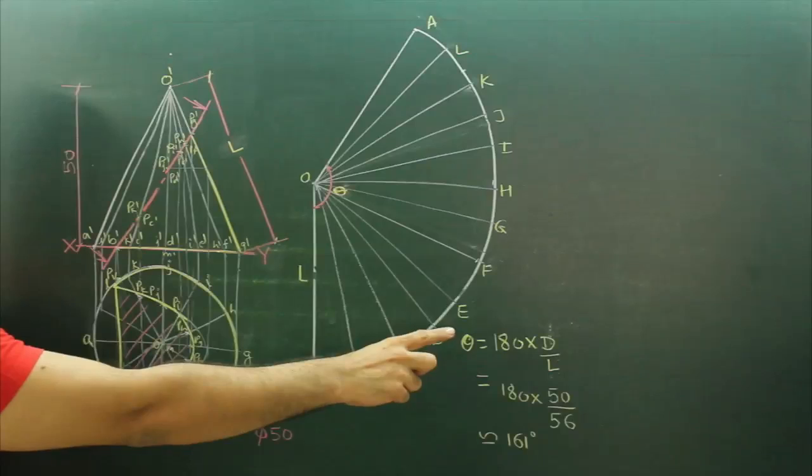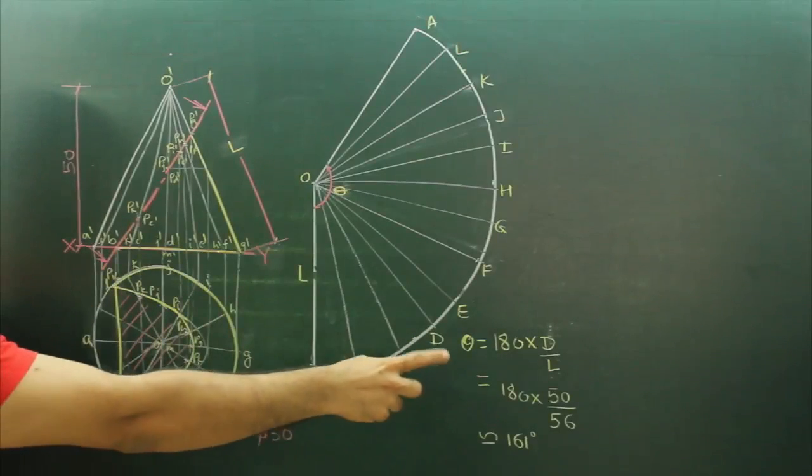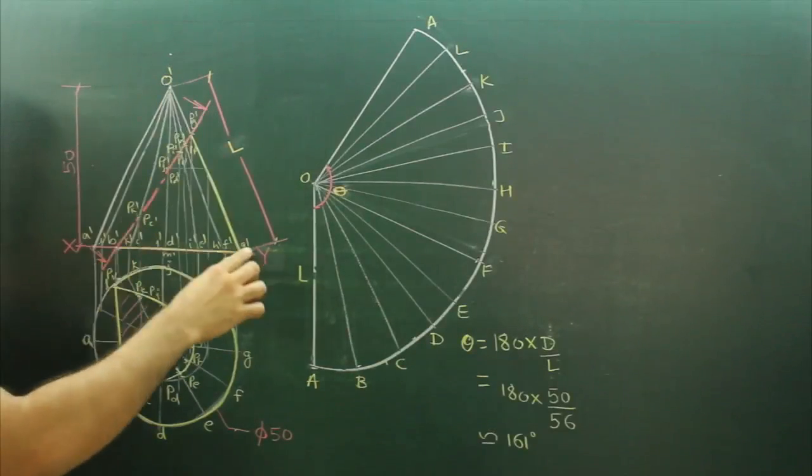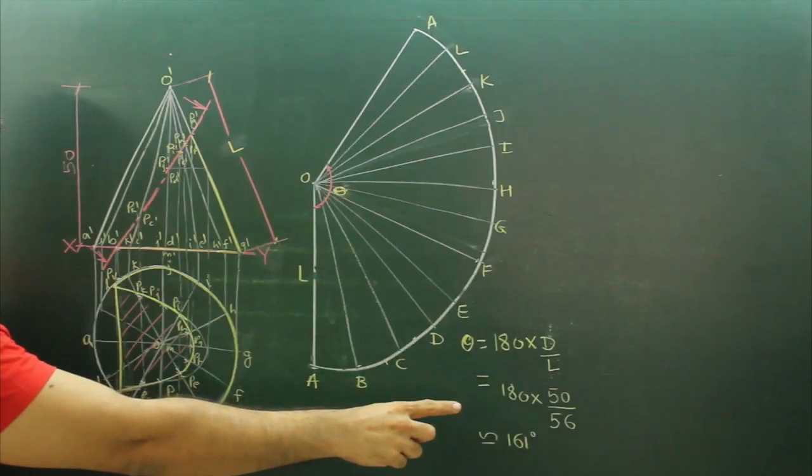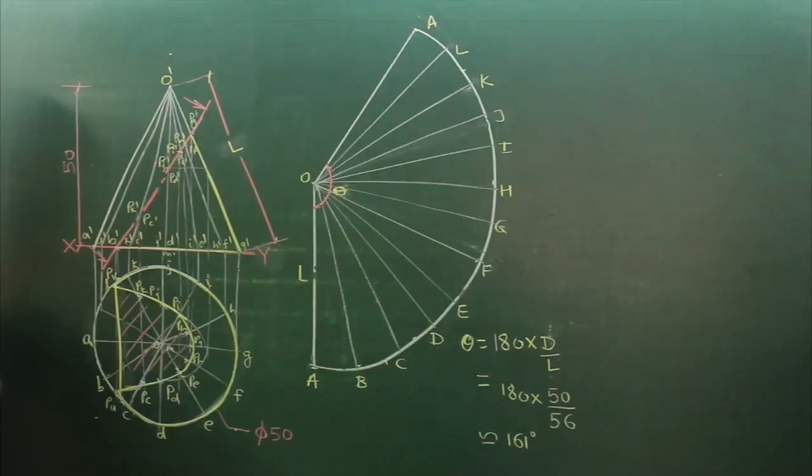Where 180 into d is diameter, which is diameter of a cone. And L is slant length, that is this length, not axis, slant length. So how much is the slant length? 56. So approximate angle would be 161 degree.